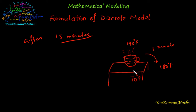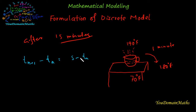Mathematically, the temperature change will be defined as T(n+1) minus T(n), which represents the rate of change of temperature. This is proportional to the difference between the object temperature and the room temperature, with K as the proportional constant. This is the mathematical model according to Newton's Law of Cooling.